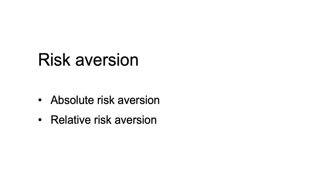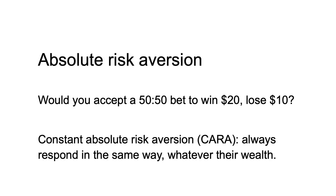In studying economics, you may encounter two measures of risk aversion: absolute risk aversion and relative risk aversion. Absolute risk aversion is a measure of how risk-averse a person is at any particular level of wealth. A person with constant absolute risk aversion, CARA, responds to a fixed sum bet in the same way whatever their wealth. For example, when faced with a 50-50 bet to win $20 or lose $10, they will make the same decision regardless of whether they have $100 or $1 million in their bank account.